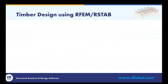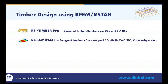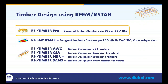Let's have a look at the timber design add-on modules. We have the module RF Timber Pro — always depending on whether it's for RFEM or R-Stab. With this module, we can do a design for timber members per Eurocode 5 or the Swiss standard SIA 265. Then we have the module RF Laminate for the design of laminate surfaces. Today we will use the module RF Timber Pro.